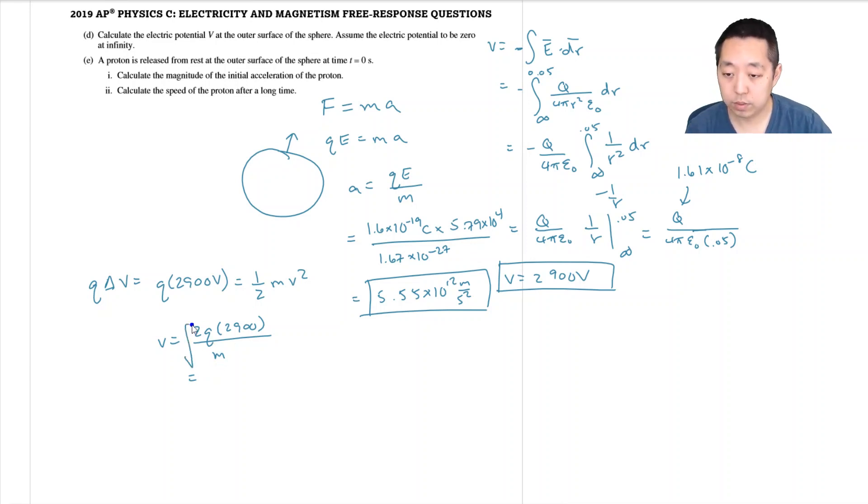So square root of 2 times 1.6 e minus 19 times 2900 divided by 1.67 e minus 27. 745,000 meters per second. Just double check if that's what I got. Yep. Alright.